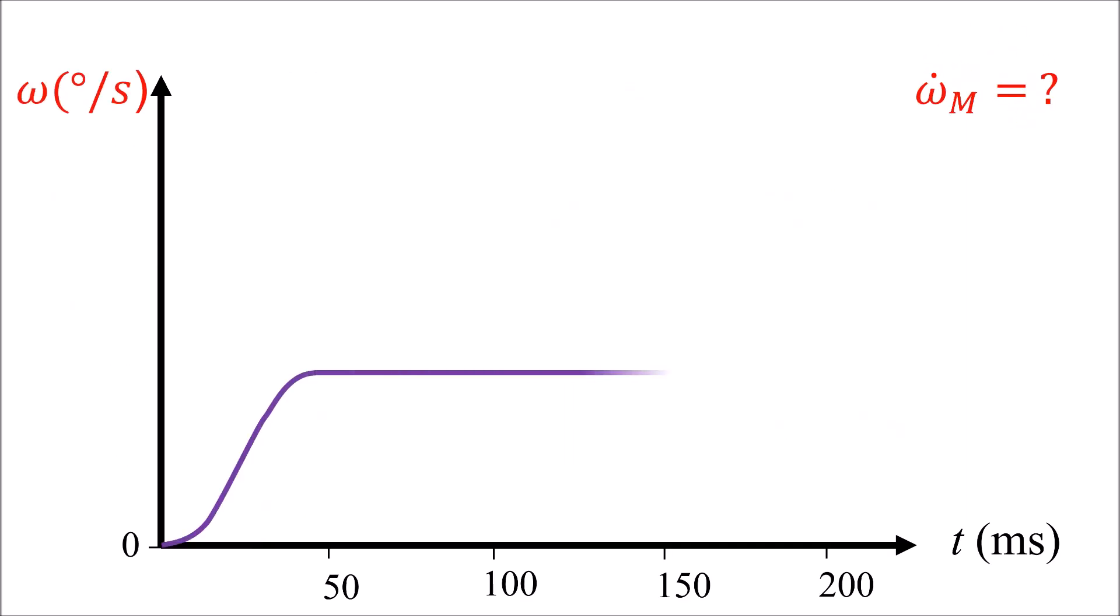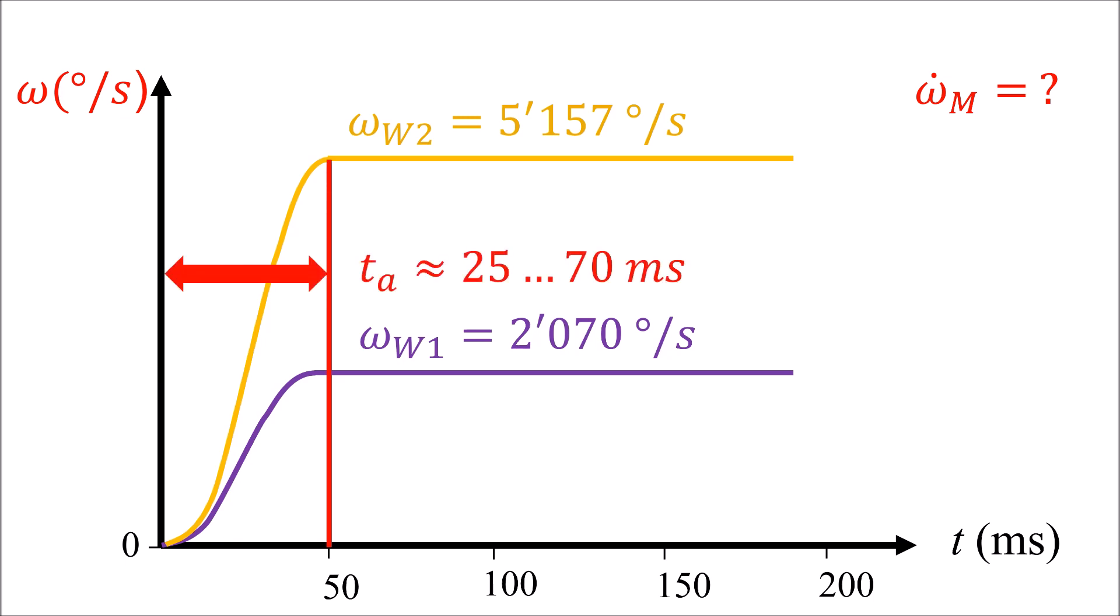How do we get the accelerations out of the speeds? The temporal pattern of angular speed can be plotted from the measurements. Then the angular accelerations can be approximated after linearizing the speed curves.